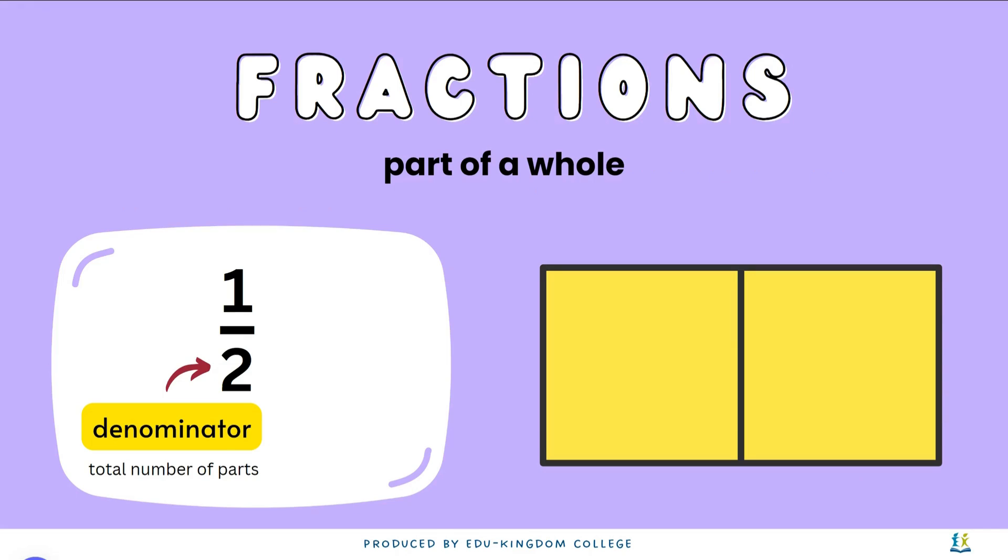The number on the bottom is the denominator. It is the total number of parts. For the fraction one half here, we have two parts in total. The number on top is the numerator. That is the number of parts we have.